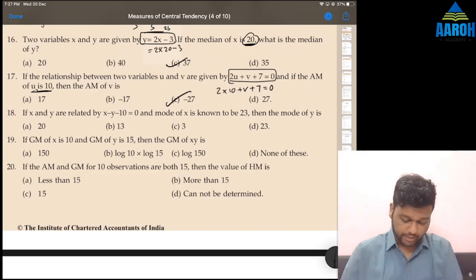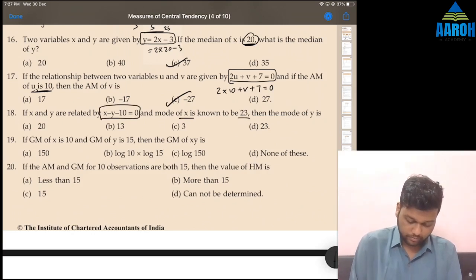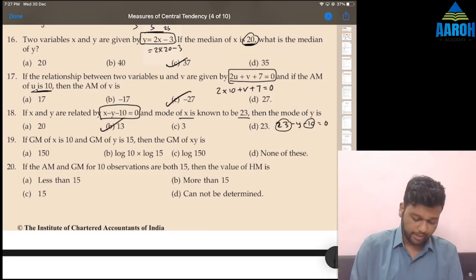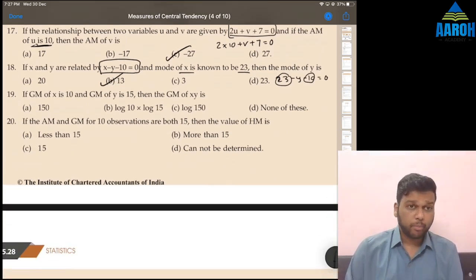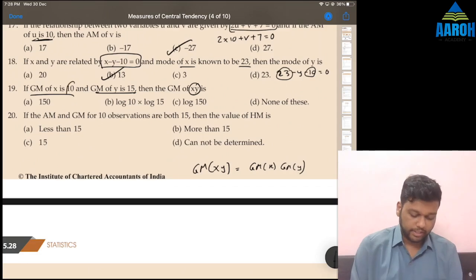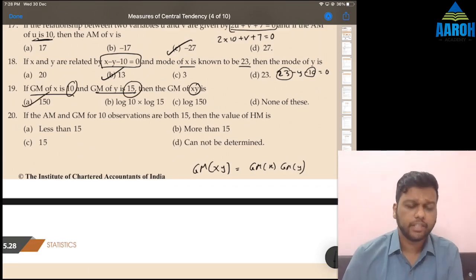18th is again exactly same. Mode of X is 23. 23 minus 10 is 13, so 13 minus Y is 0, that means 13 equals Y. 13 is the correct answer. For 19th, we have a property. If GM of X is 10 and GM of Y is 15, then GM of XY. We have this property that GM of XY is equal to GM of X into GM of Y. So it is just 10 into 15, that's 150. GM of XY will be 150 directly.